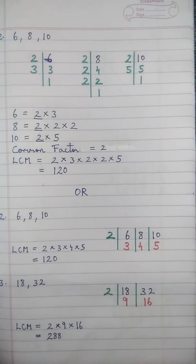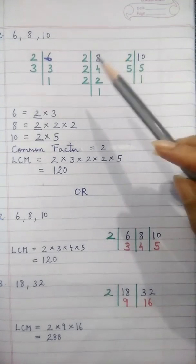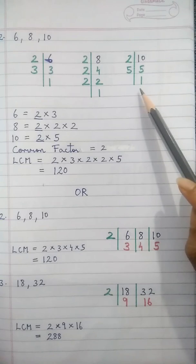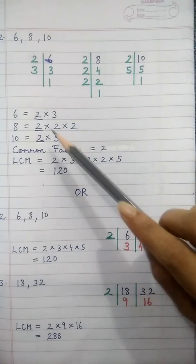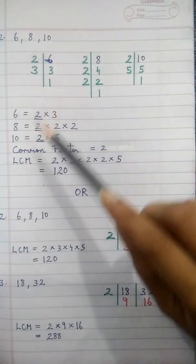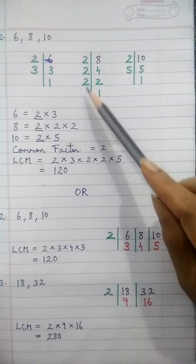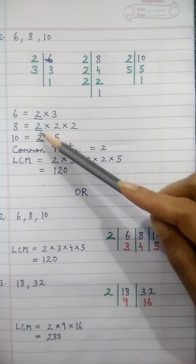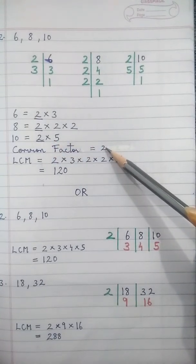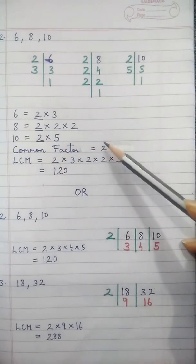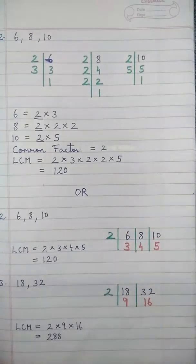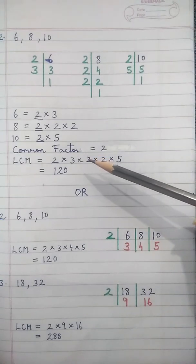Sum number 2: numbers given are 6, 8, and 10. Finding factors separately: factors of 6 are 2 into 3, factors of 8 are 2 into 2 into 2, and factors of 10 are 2 into 5. Underline the common factor and write it once. LCM is this common factor multiplied by all the remaining factors, which gives 120.